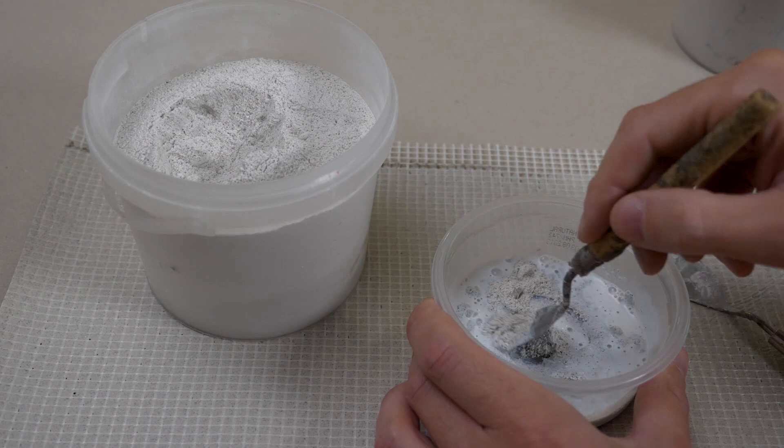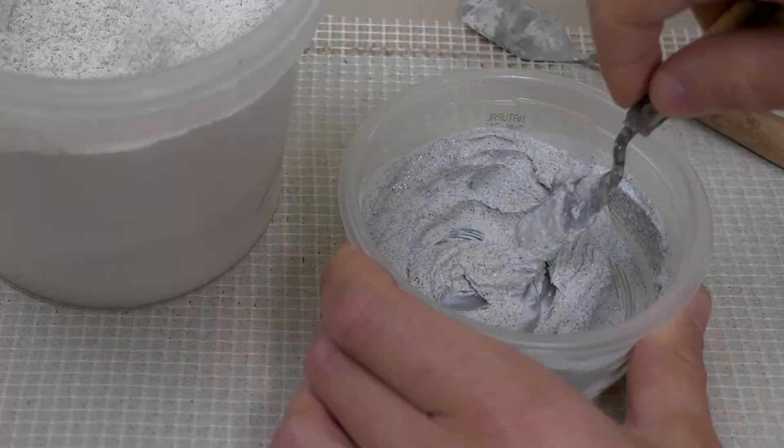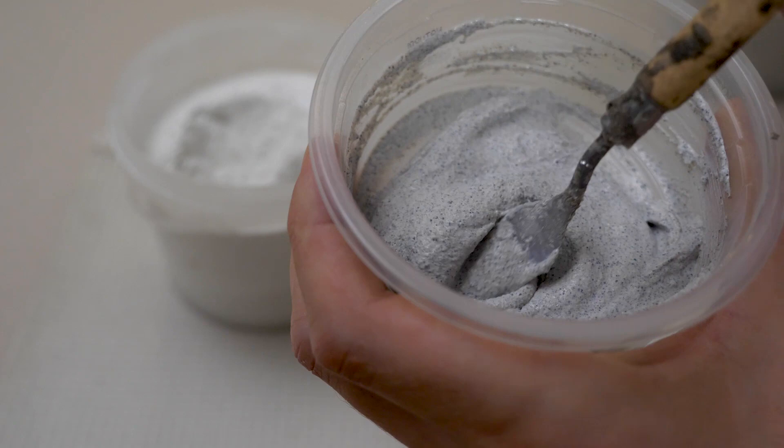Mix glue to butter consistency, to be nice and smooth. And if you will work vertically, then density of glue should be a little thicker, otherwise tessera will slide down.